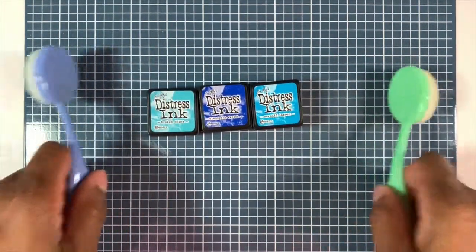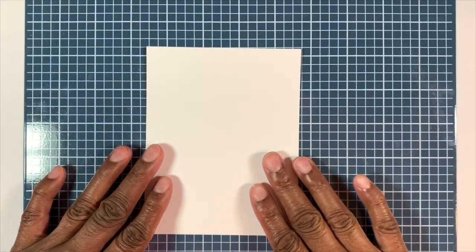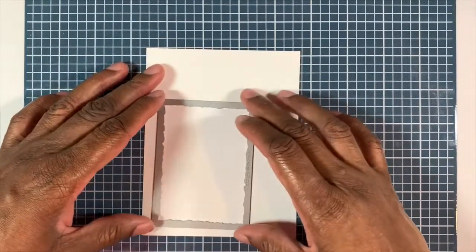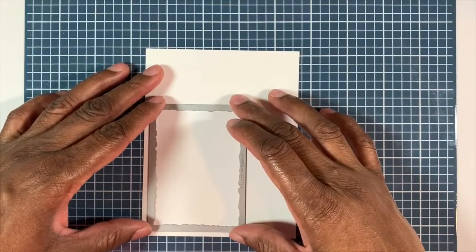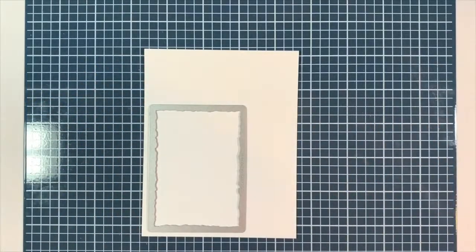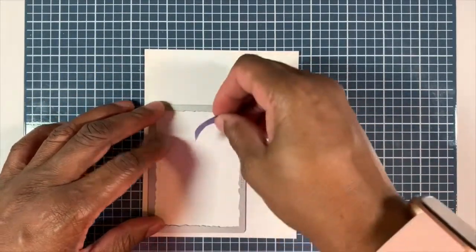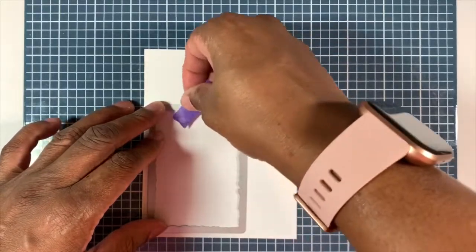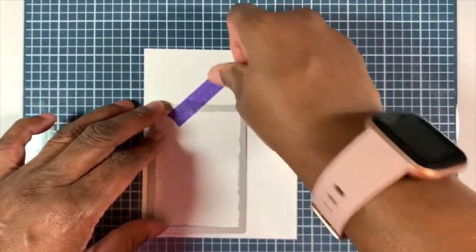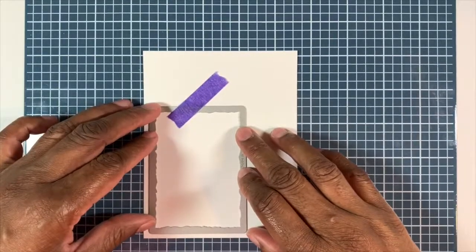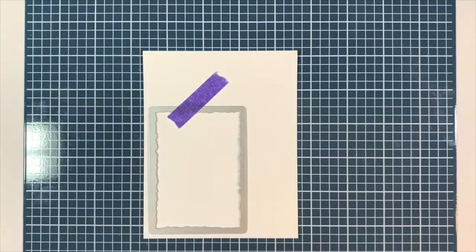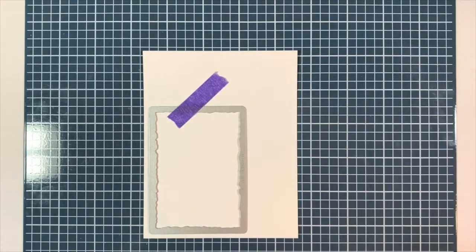So you just saw the Tim Holtz Sizzix Thinlet stacked deckle. They give like a distress edge on the card panels. I love that look. We're going to be using some distress inks: broken china, blueprint sketch, and mermaid lagoon. We also have a couple of stamp sets. The first one is from Lawn Fawn Float My Boat. And then the second is from Studio G with the Father's Day sentiment.